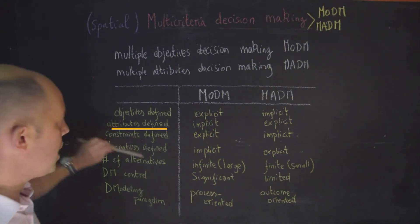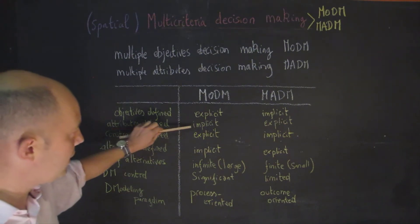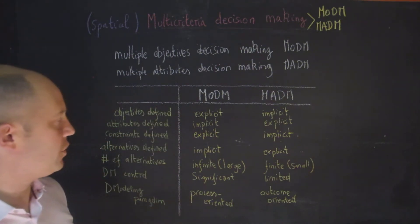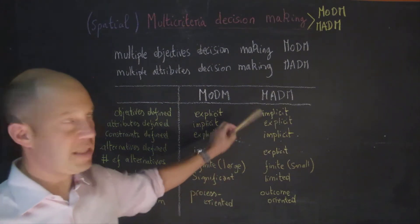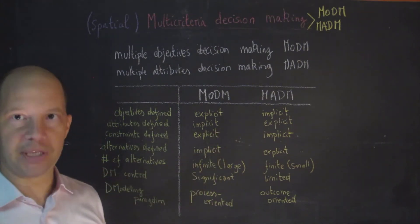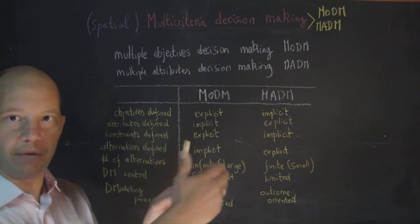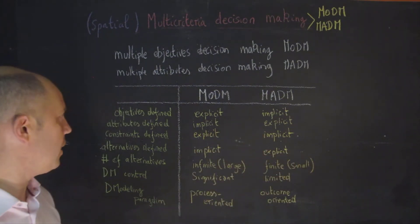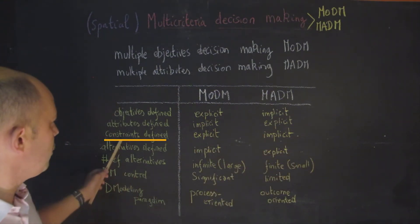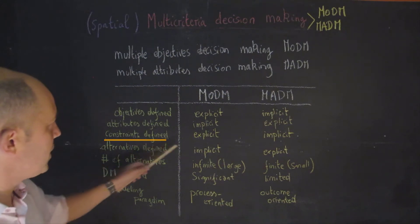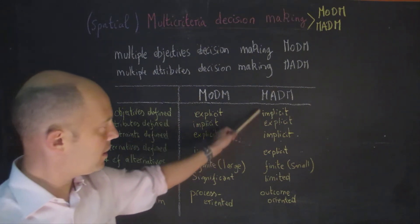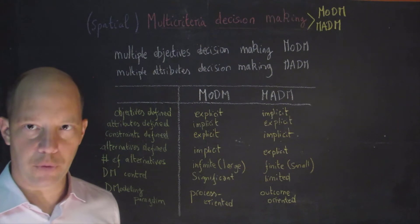The attributes are implicitly defined in multiple objective decision-making, but they are explicit in multiple attribute decision-making — when we purchase an apartment, we have all these attributes coming into account. In terms of constraints, those are explicitly defined in multiple objective and implicitly defined in multiple attributes.